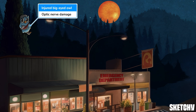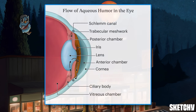This injured owl with big eyes will help you remember that glaucoma can damage the optic nerve. So before we get too far into this, let's examine the eye more closely. The eye is divided into three chambers.